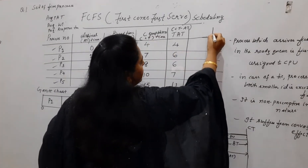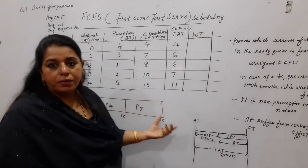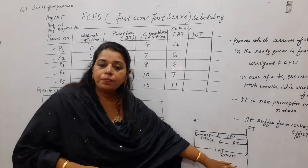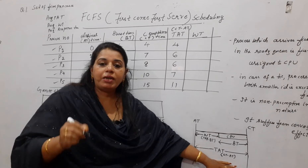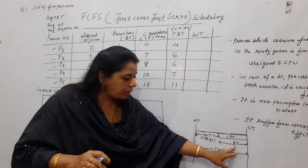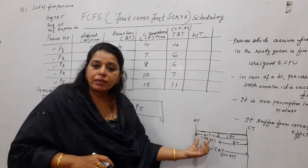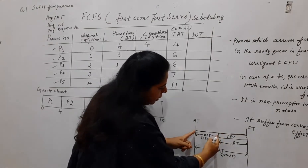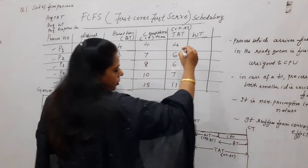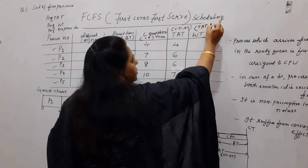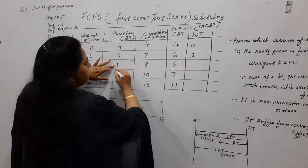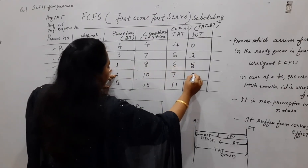Then comes the waiting time. Waiting time is the total time a process spends in the system minus the time it takes to execute its task with the CPU — that CPU time is the burst time. So waiting time equals turnaround time minus burst time. P1 — 4 minus 4 equals 0; P2 — 6 minus 3 equals 3; P3 — 6 minus 1 equals 5; P4 — 7 minus 2 equals 5; P5 — 11 minus 5 equals 6.